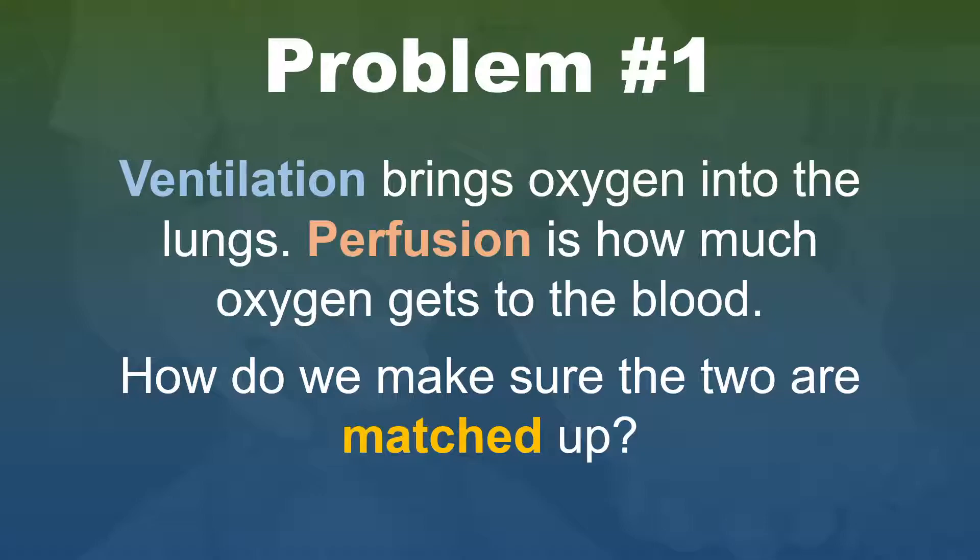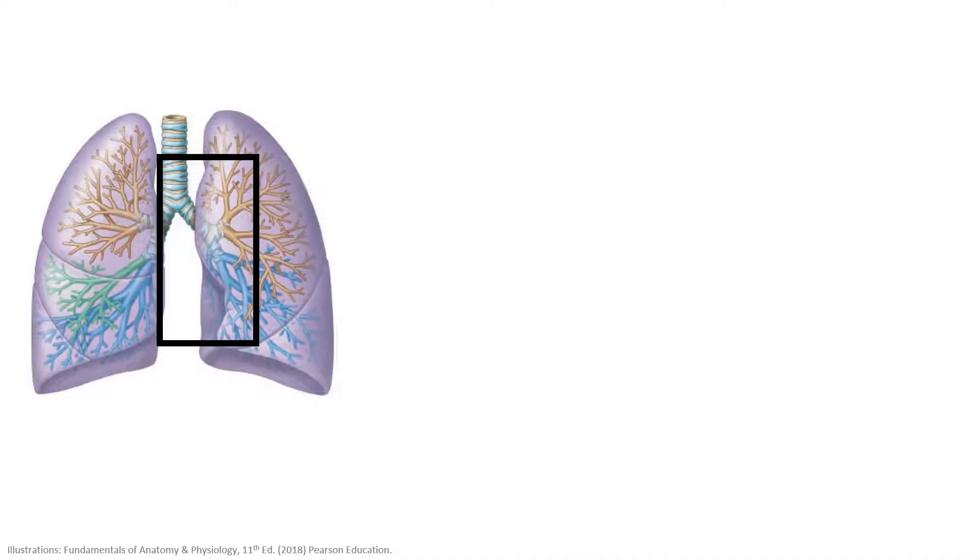Fortunately, we can bring fresh air into our lungs through the process of ventilation, and we can also pump blood from our heart into our lungs to pick up that oxygen in a process called perfusion. But this process is a little bit more complicated than we think. So how do we make sure the amount of ventilation and the amount of perfusion are matched up so we can absorb the oxygen our body needs? To answer that, we need to start off with an overview of the anatomy of the respiratory system.